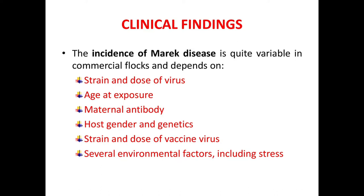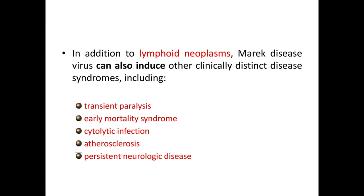Coming to the clinical findings, the incidence of Marek's disease is quite variable in commercial flocks and depends on strain and dose of virus, age at exposure, maternal antibody, host gender and genetics, strain and dose of vaccine virus, and several environmental factors including stress. In addition to lymphoid neoplasms, MDV can also induce other clinically distinct disease syndromes including transient paralysis, early mortality syndrome, cytolytic infection, atherosclerosis, and persistent neurologic damage.